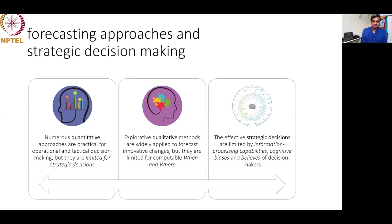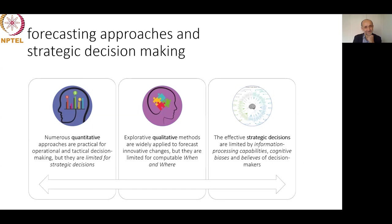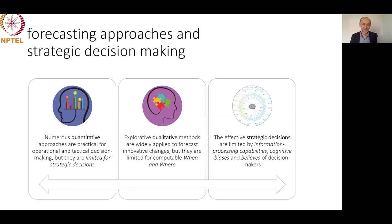For strategic decision-making, there is no other choice — we have to combine qualitative and quantitative forecasting: assemble the qualitative forecast puzzle with measurable quantitative timing of when the puzzle will take place. Thank you for your attention. See you for the next part of our course.